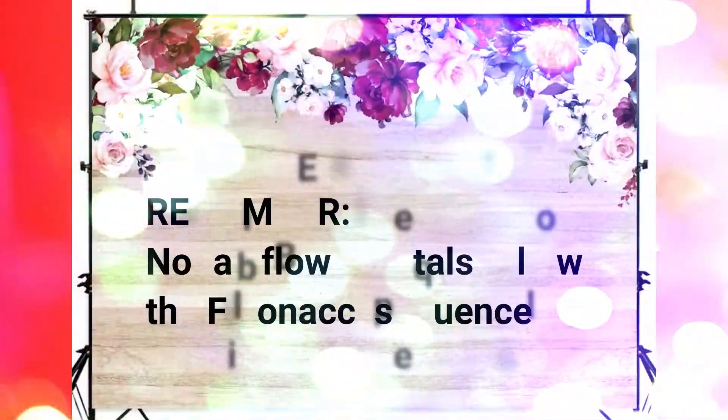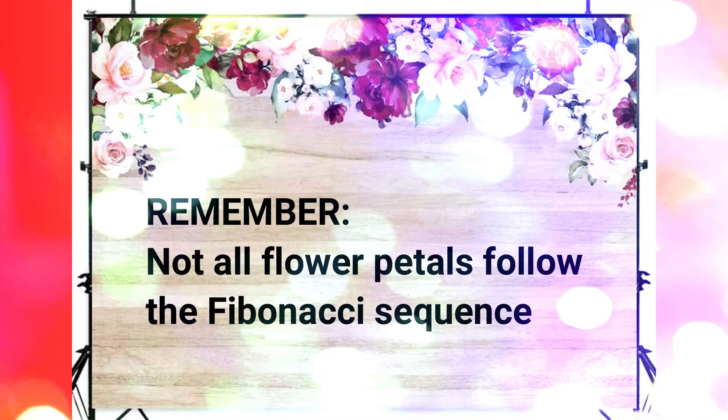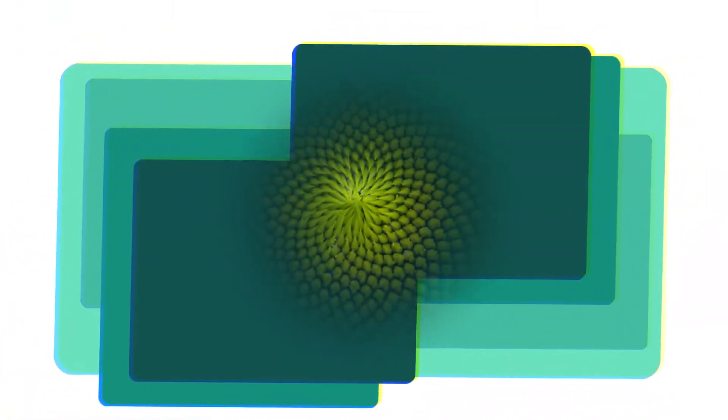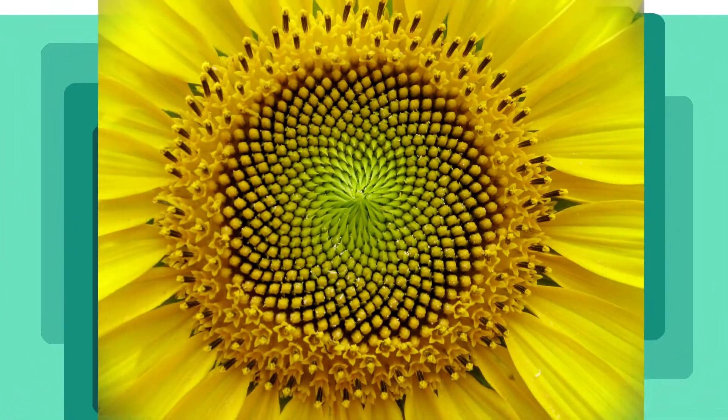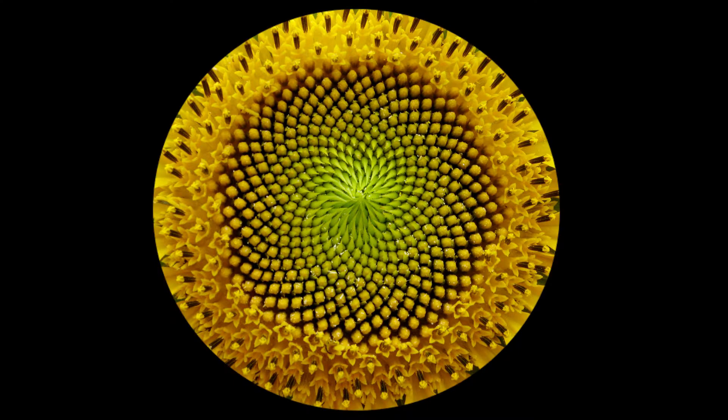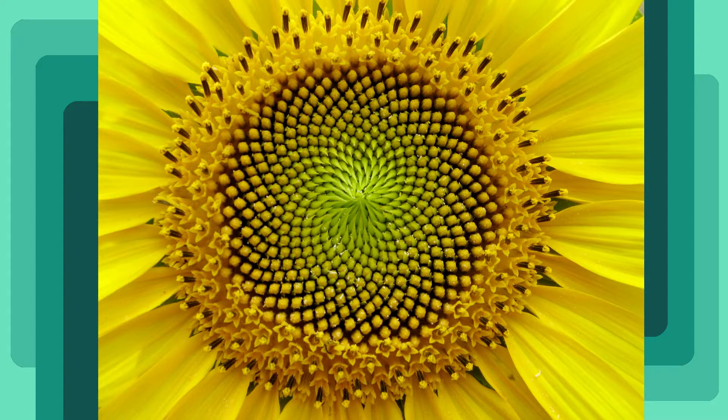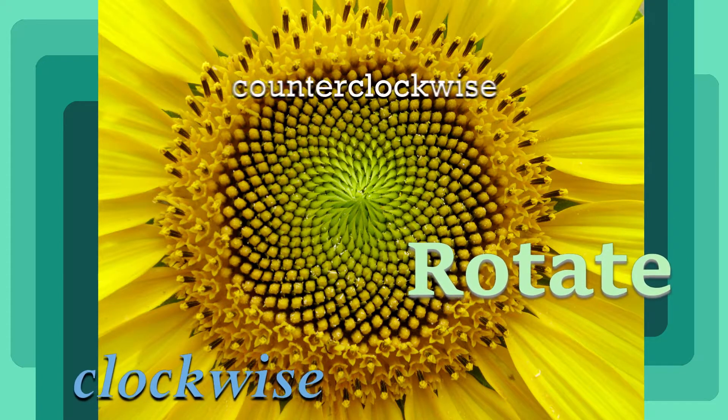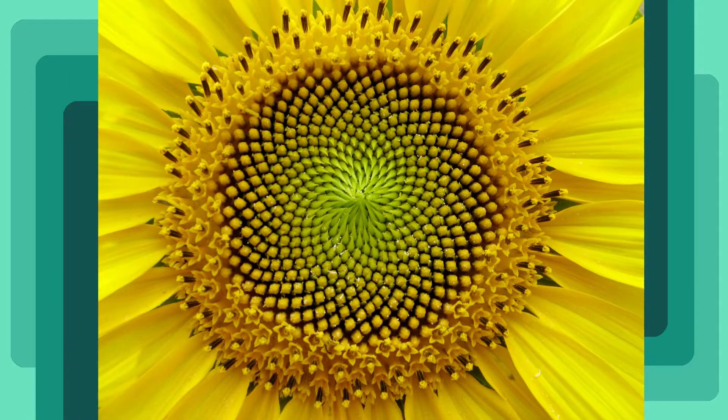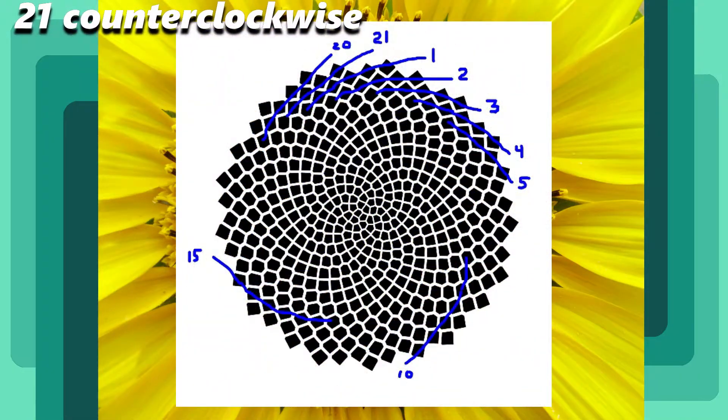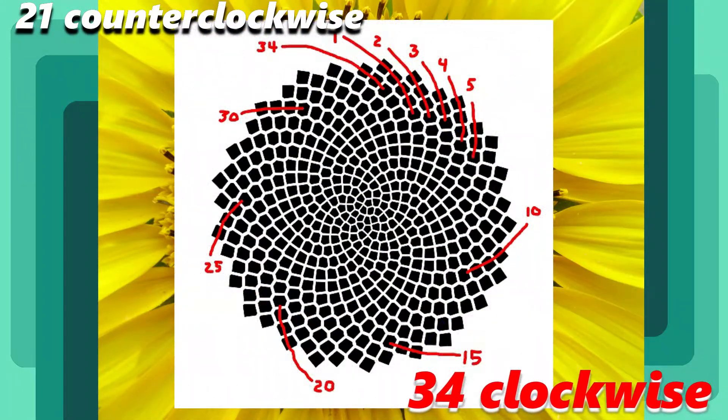Now take a closer look into this photo of a sunflower. Notice the apparent spirals in the flower radiating out from the center to the edge. These spirals appear to rotate both clockwise and counterclockwise. By counting them, one finds 21 counterclockwise spirals and 34 clockwise spirals.